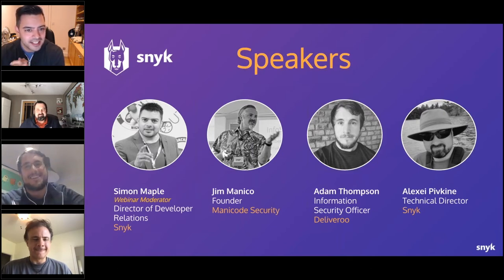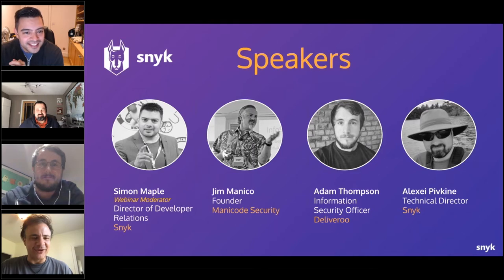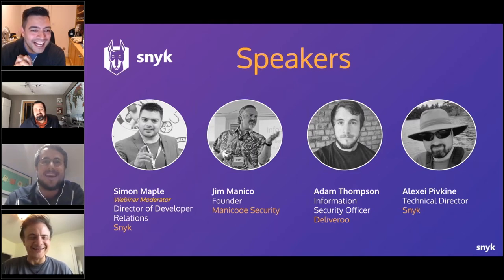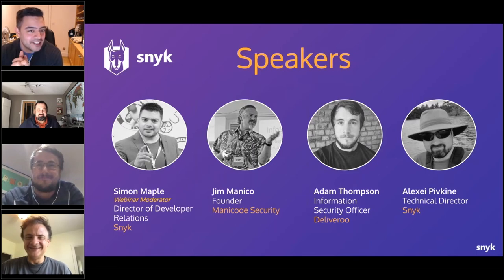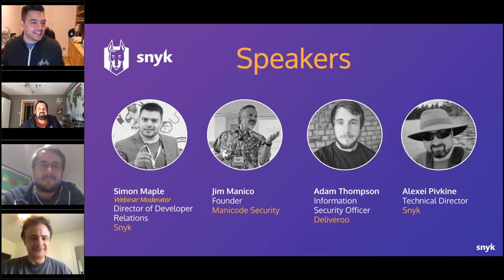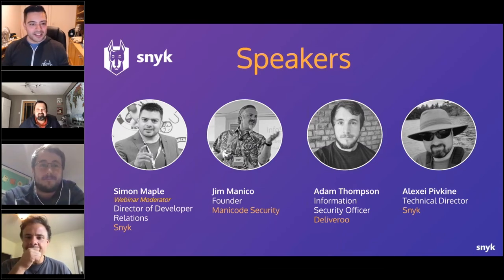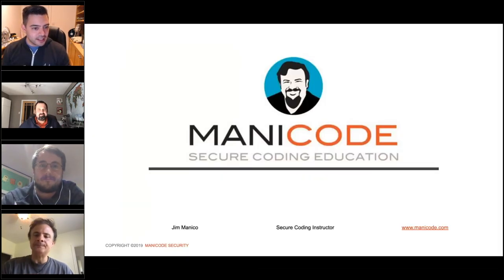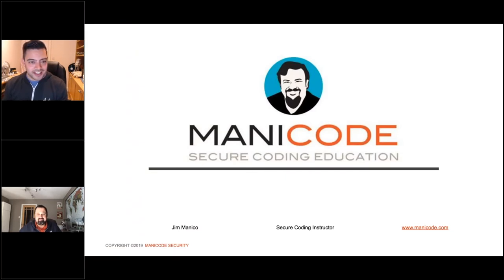Last but not least, Adam Thompson is the InfoSec Officer at Deliveroo. He's calling in from London, where all engineering efforts are based. Jim is in the DC office of Manicode — they also have an office in Hawaii — and Alexi is in Ottawa, Canada. We have participants from very different parts of the world.